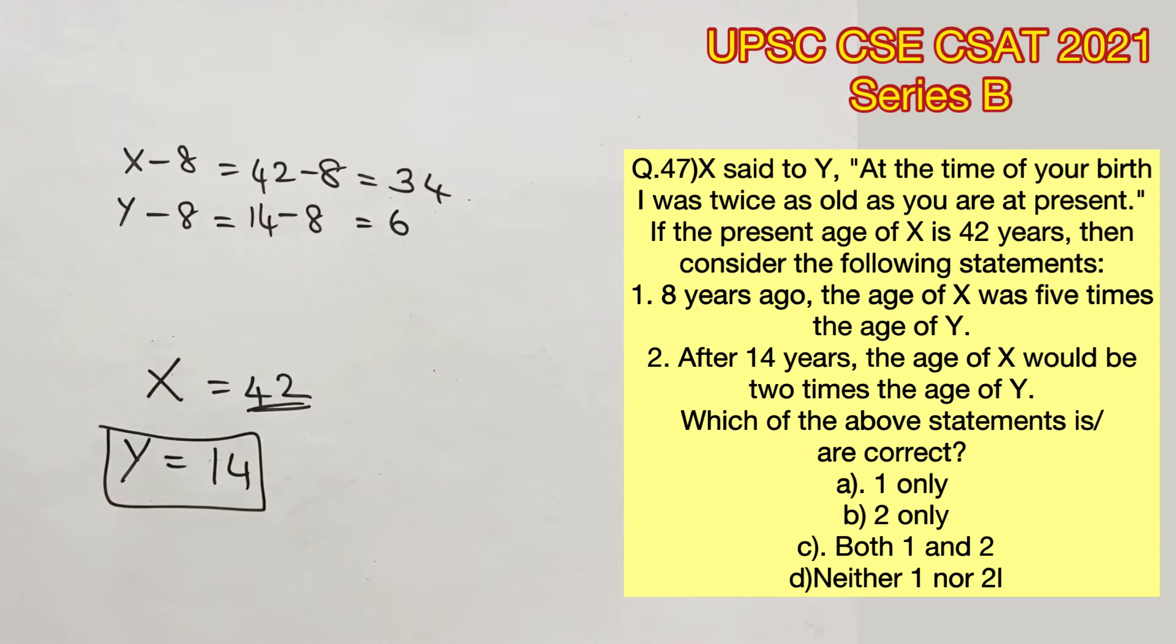Now we can clearly see that the age of X is not 5 times that of Y. So statement 1 is wrong.